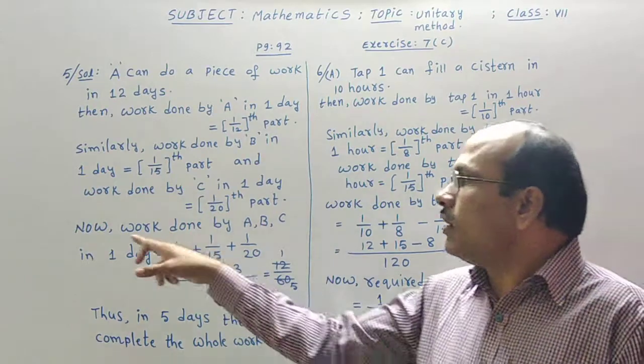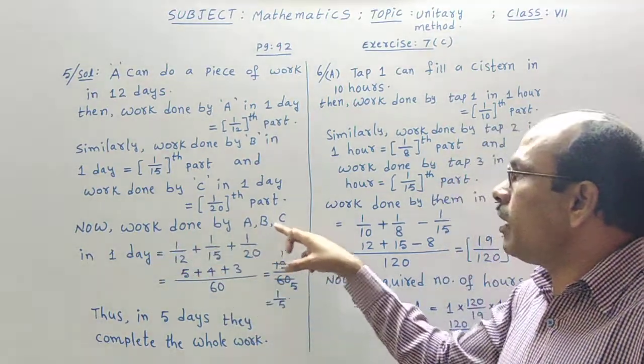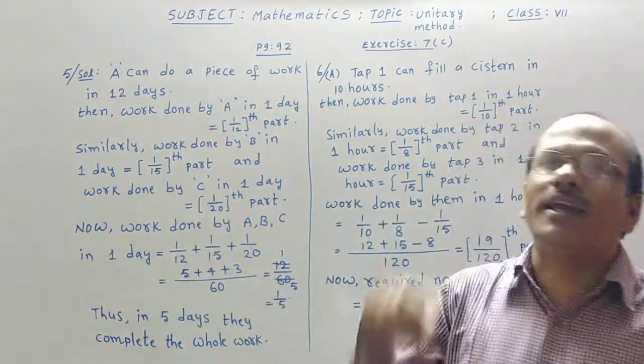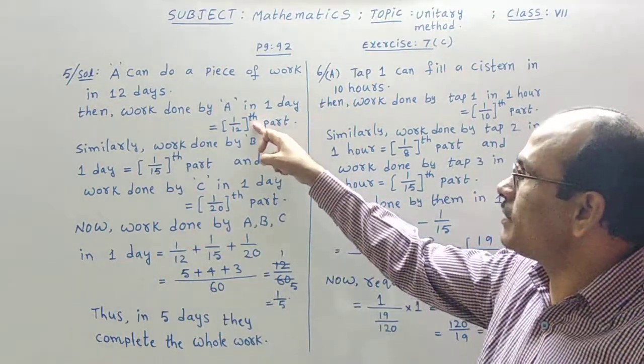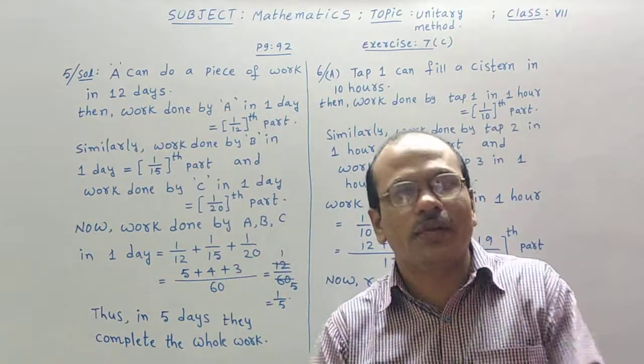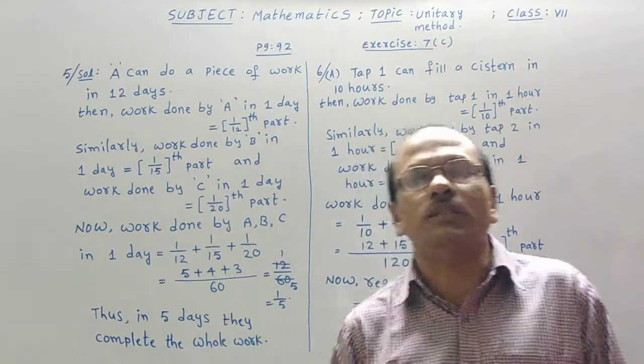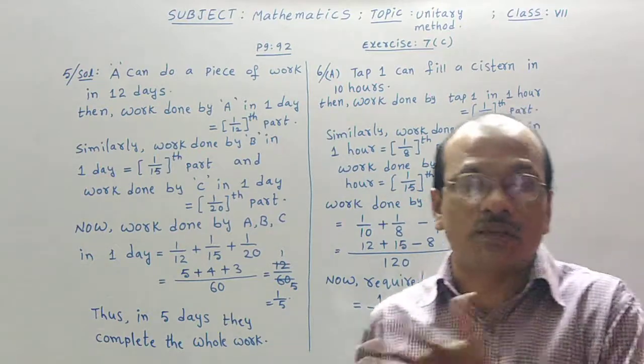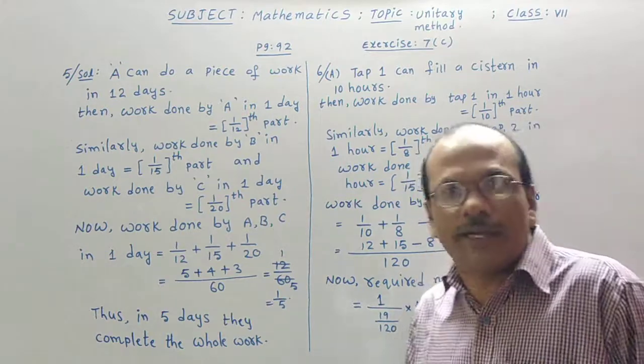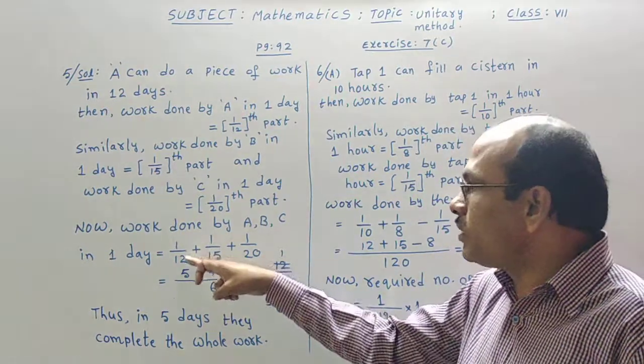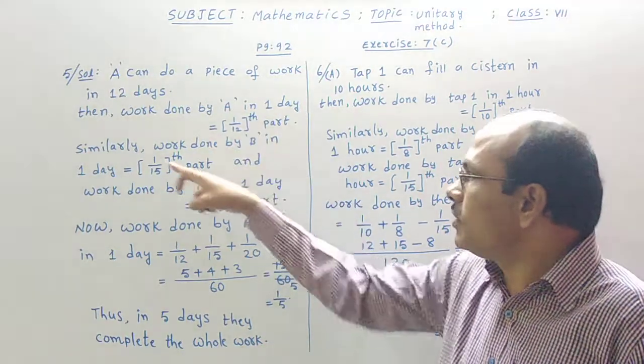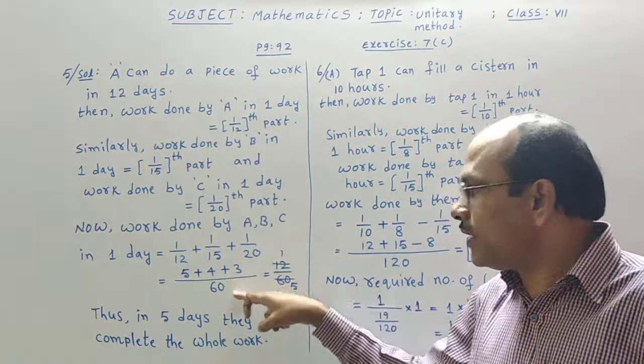Then finally what they said. Now work done by A, B, C, all the three people together in one day. First person's one day's work. Second person's one day's work. Third person's one day's work. Together, if at all they work, in how many days they will finish the whole work is the question. Definitely, we have to add the abilities. Am I correct? So, 1 by 12 plus 1 by 15 plus 1 by 20. These three are adding.